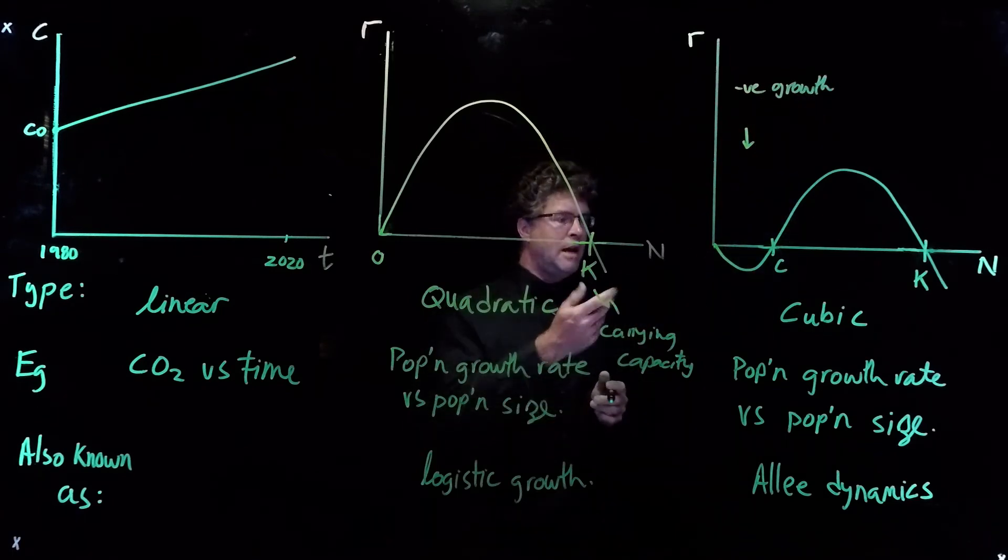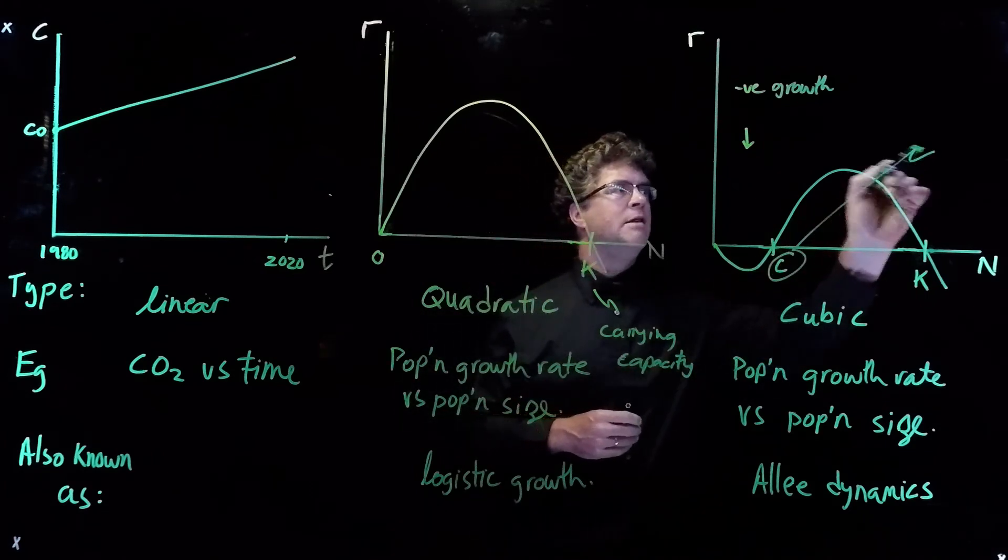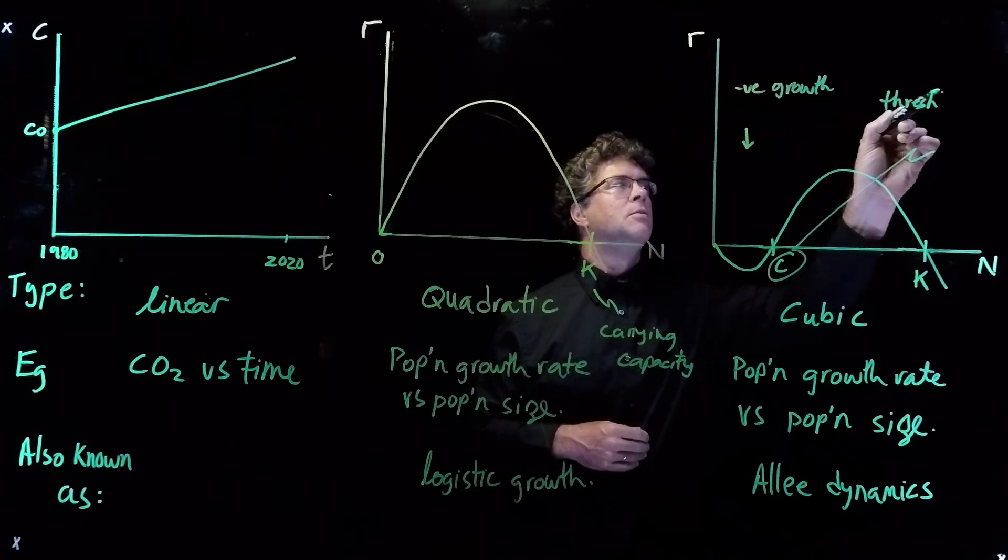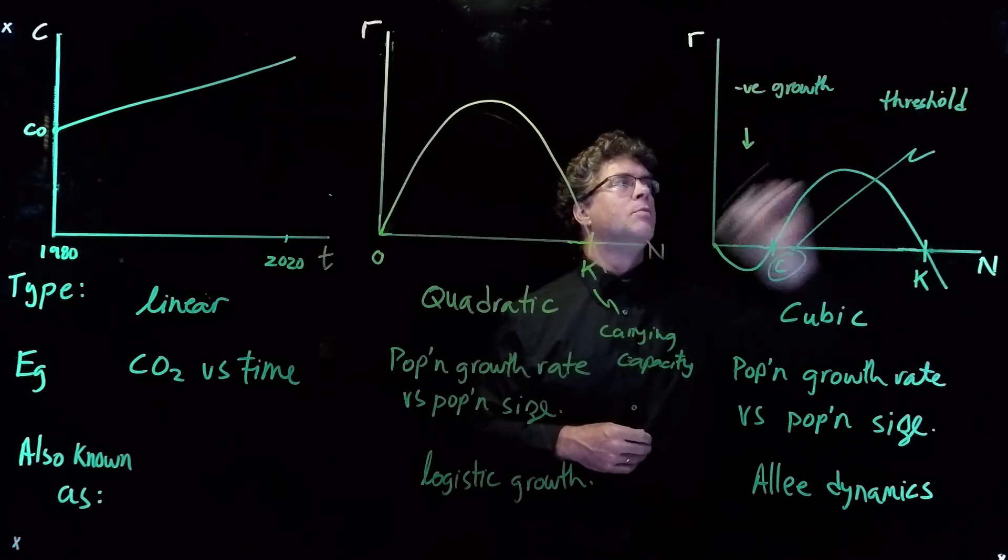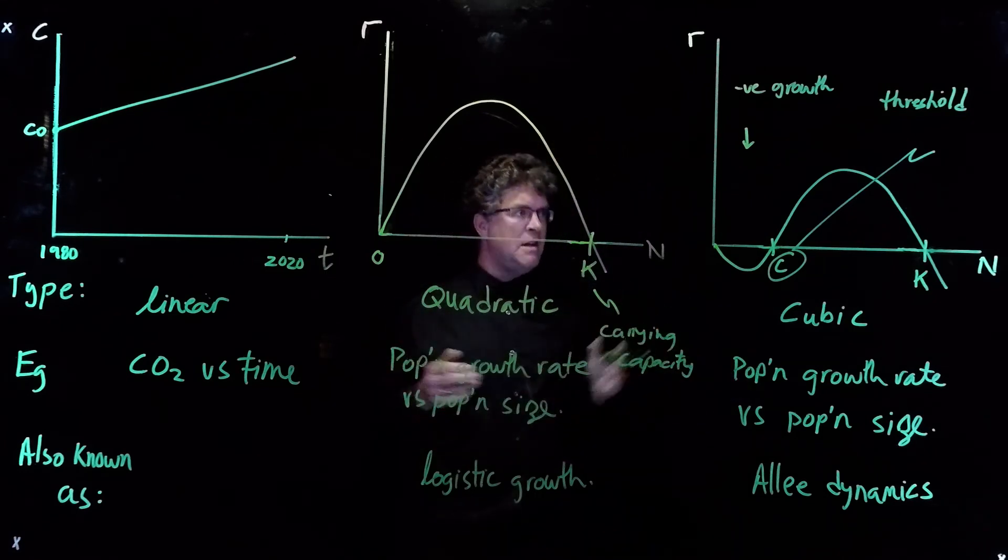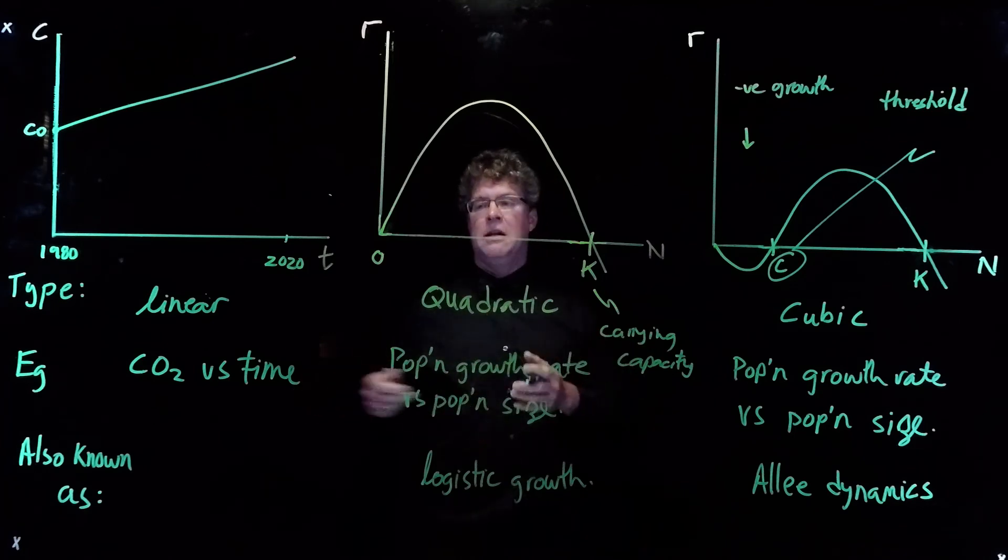As before, k is the carrying capacity, and now the quantity c is a threshold. So if the population size lies between c and k, it'll grow. If it lies below c, it'll decline.